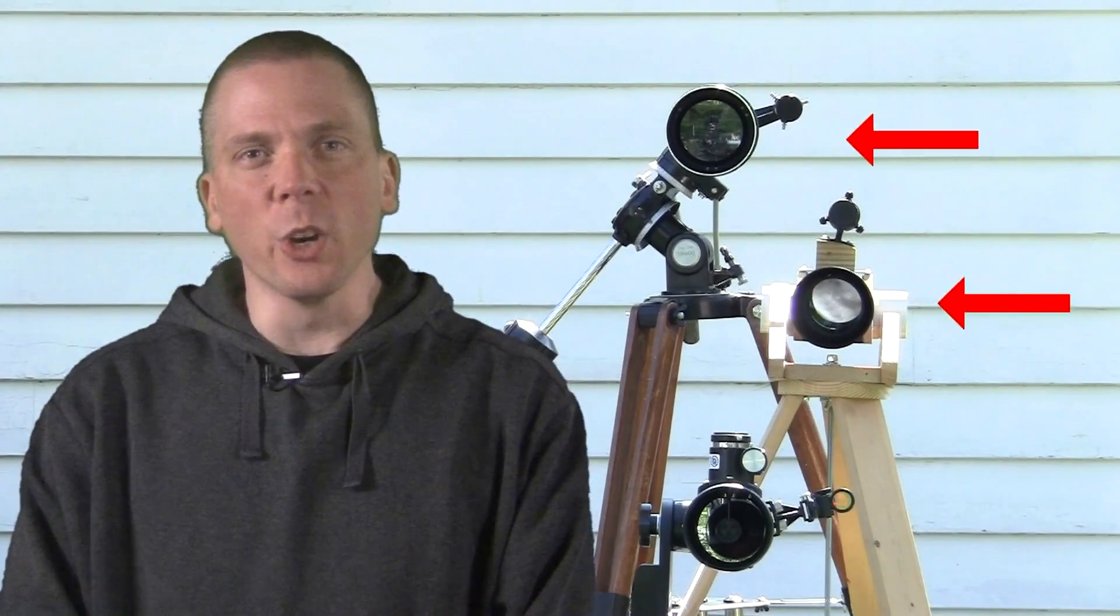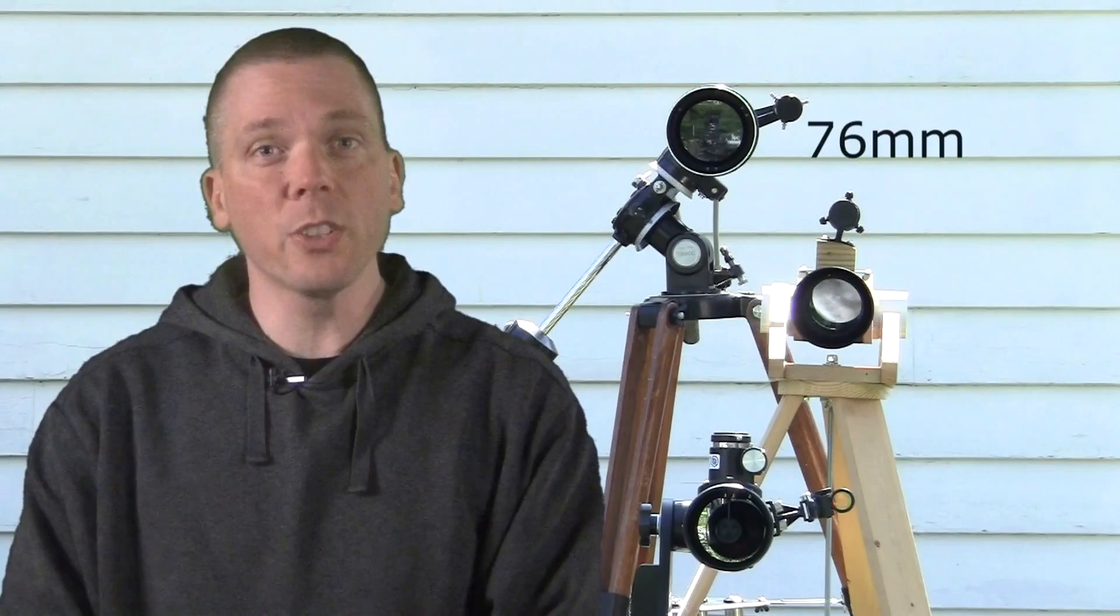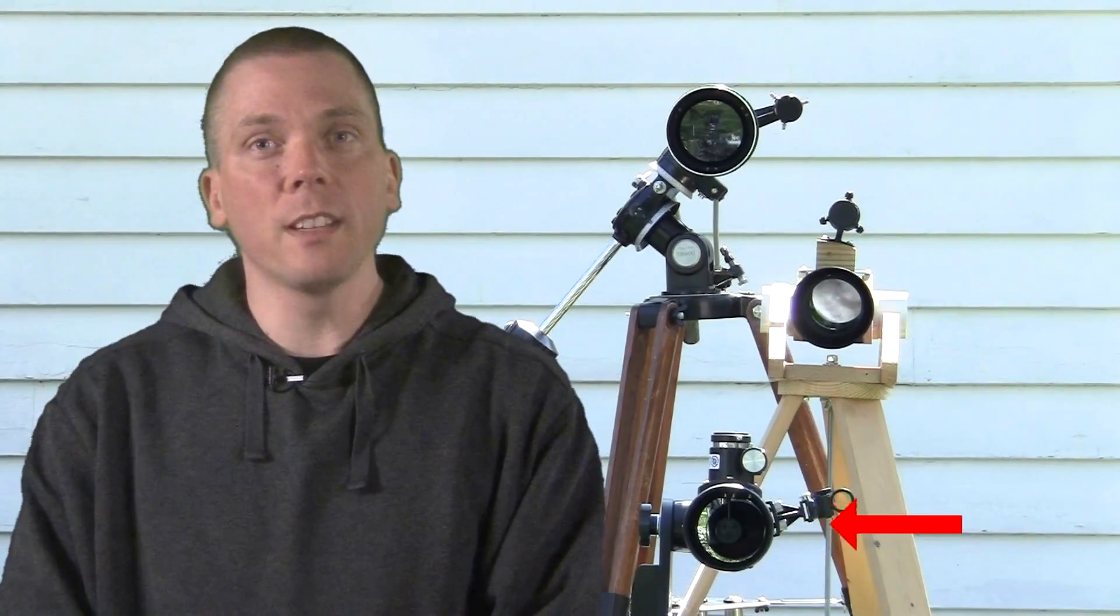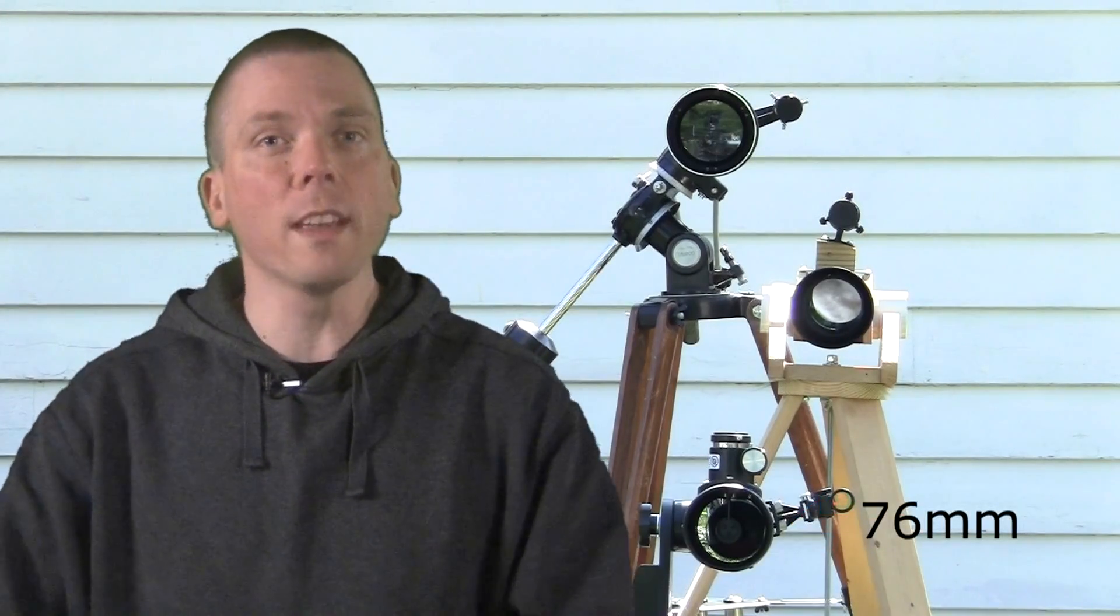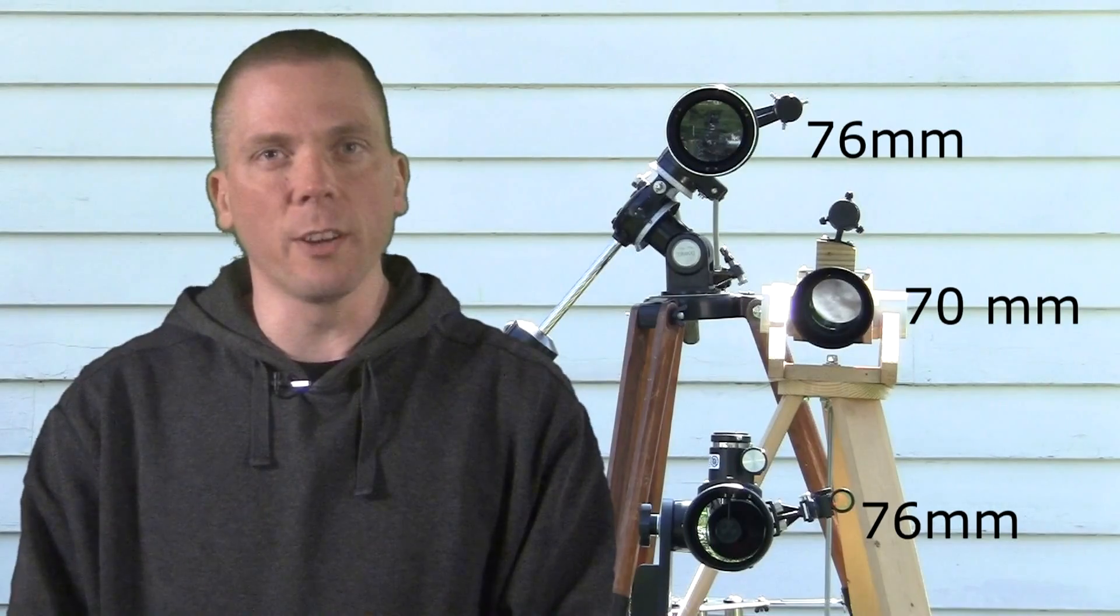Take a look at these three amateur telescopes. It may not appear so at first, but all three are actually the same size. No, really, let's take a closer look. These two telescopes have similar sized lenses, this one is 76mm and this one is 70mm. This short reflector has a mirror of 76mm, so they are all within 6mm, or about a quarter of an inch in diameter of each other.